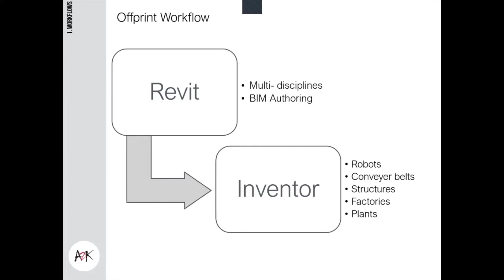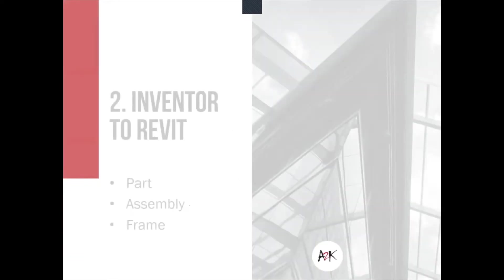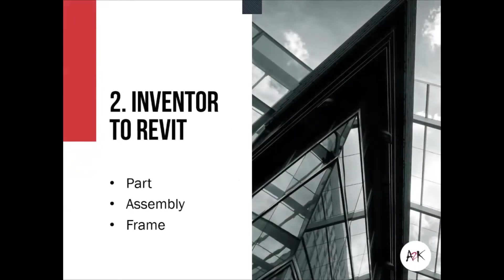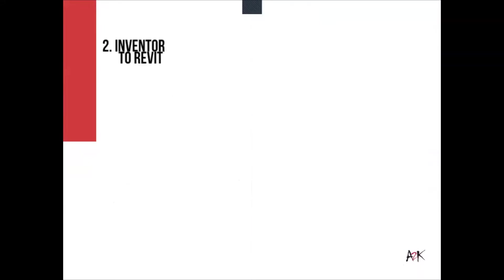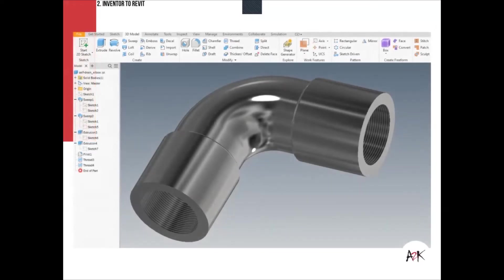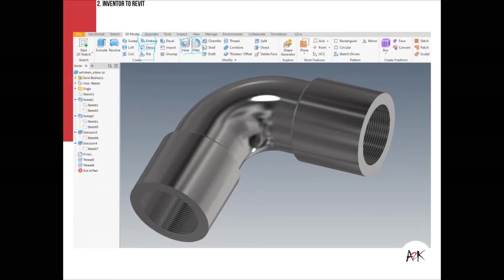We can also get multi-body parts into Inventor. Let's first look at the workflow going from Inventor to Revit. We want to look at a couple of parts and studies to see how frames actually behave. Very classically in Inventor you might find modeling tools — like emboss, grip features, holes and fillets — for tiny detailed parts that you obviously don't want to model twice. So how do we bring this geometry into Revit?